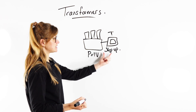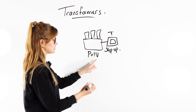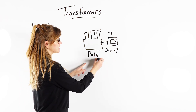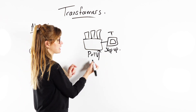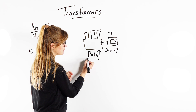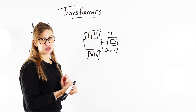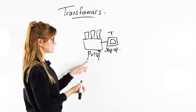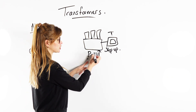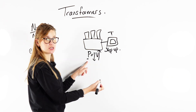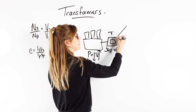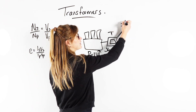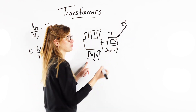What the step-up transformer does is increase the voltage. My power station is going to have a certain power. If we increase the voltage for a set power, that means the current gets dropped. So if we use a step-up transformer, our current for our wires is really low.